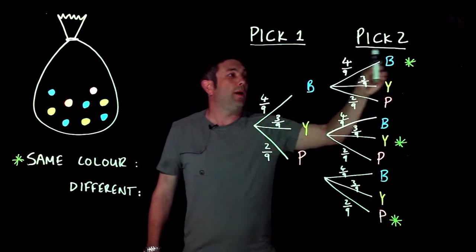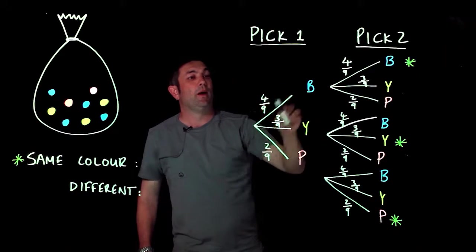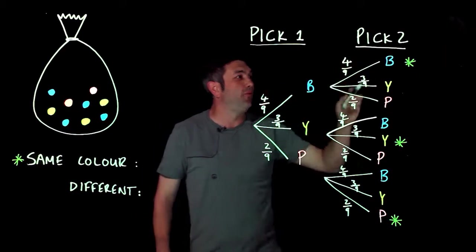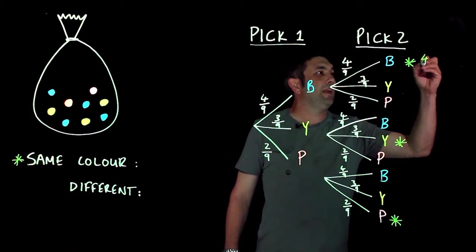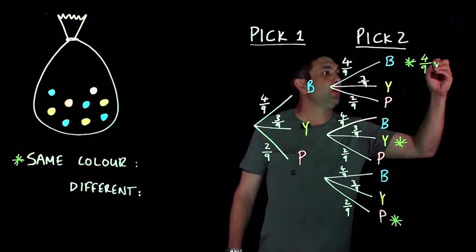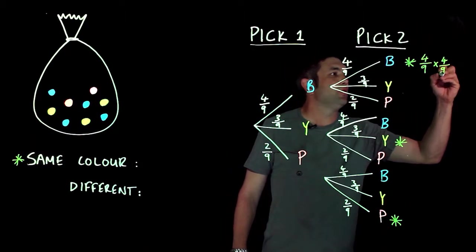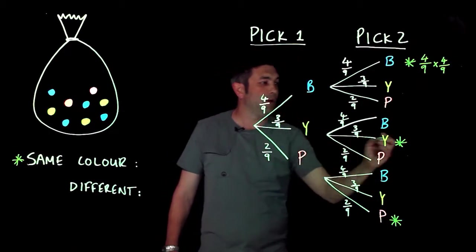Now when we're doing this, I want to pick four ninths and then four ninths. Now when you see the word 'and' in probability, it means we multiply our fractions, decimals, whatever they are: three ninths and three ninths, and three ninths, and two ninths and two ninths.